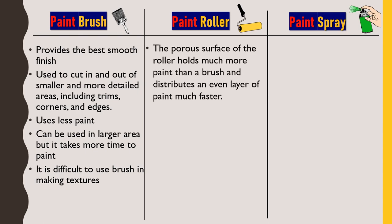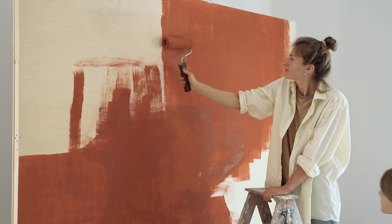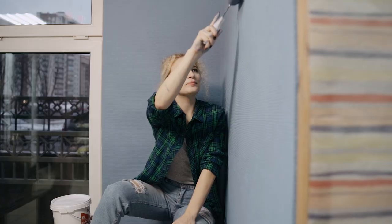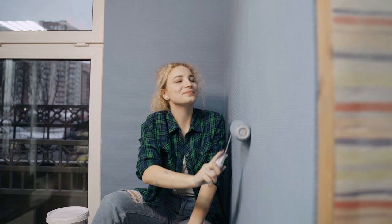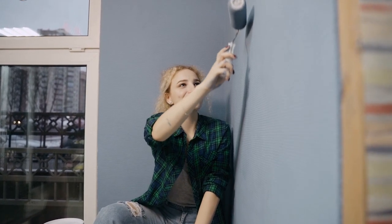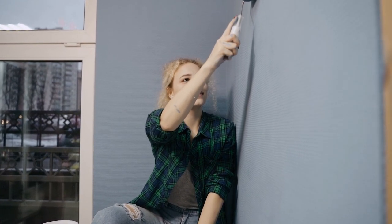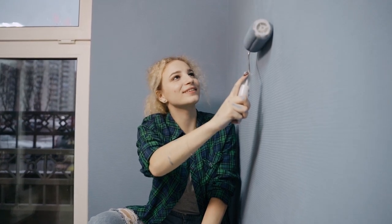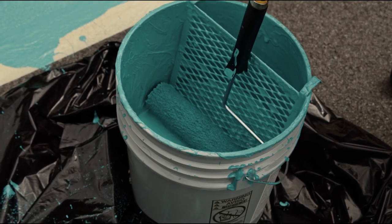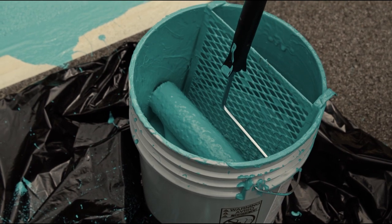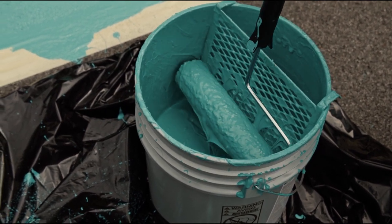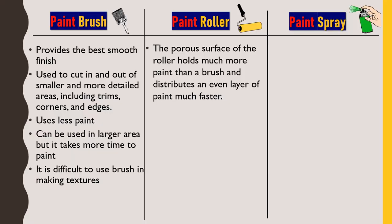Next, we'll talk about rollers. The porous surface of the roller holds much more paint than a brush and distributes an even layer of paint much faster. When we dip the roller in a paint bucket, its porous material absorbs the paint, and when we press the roller against the wall and slide it, the paint slowly and gradually comes out and is evenly distributed on the surface. It covers more area than a brush and frequent dipping is not required.